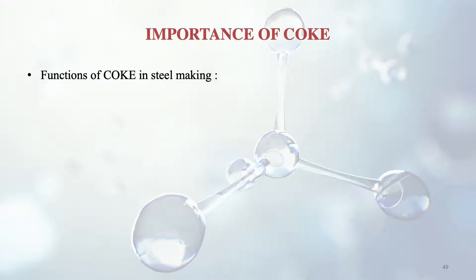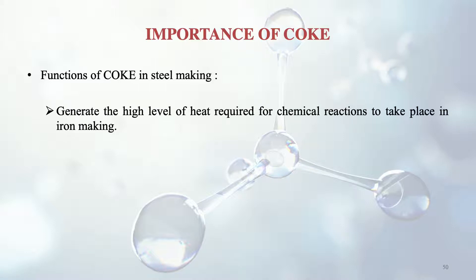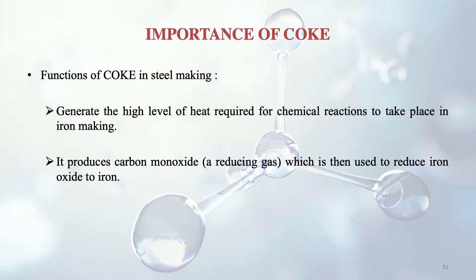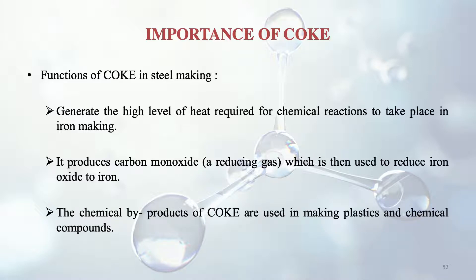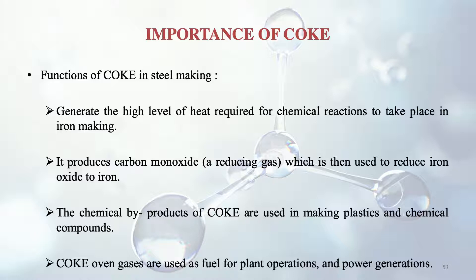The functions of coke in steel making are: it generates the high level of heat required for chemical reactions in iron making; it produces carbon monoxide, a reducing gas that helps reduce iron oxide to iron; its chemical by-products are used in making plastics and chemical compounds; and coke oven gases are used as fuel for plant operations and power generation in boilers.